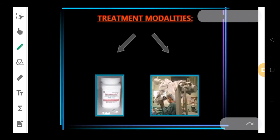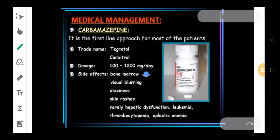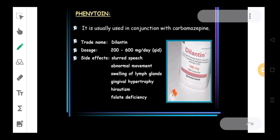The treatment modalities could be medical or surgical. Medical management could be carbamazepine. These are basically the dosage and some brand names you could see. Side effects of this are visual blurring, dizziness, skin rashes. Phenytoin could be another example. It is usually used in conjunction with carbamazepine. The dosage is 200 to 600 mg per day. You can also remember the name, that is enough.